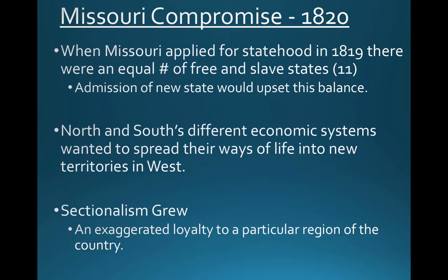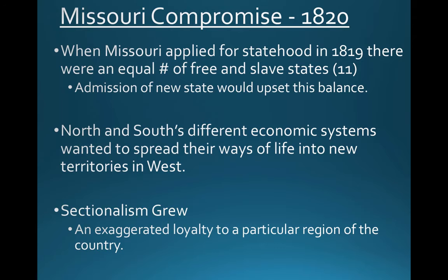In 1820, we're going to have the passing of what is called the Missouri Compromise. This came about when Missouri applied for statehood in 1819. There was an issue with its application, coming down to the number of states in the Union that were slave and non-slave. There were an equal number — 11 slave states and 11 free states — and the admission of this additional state would tip the balance. We're really worried about the amount of representation these states would have in Congress, in particular in the Senate where things were otherwise equal.